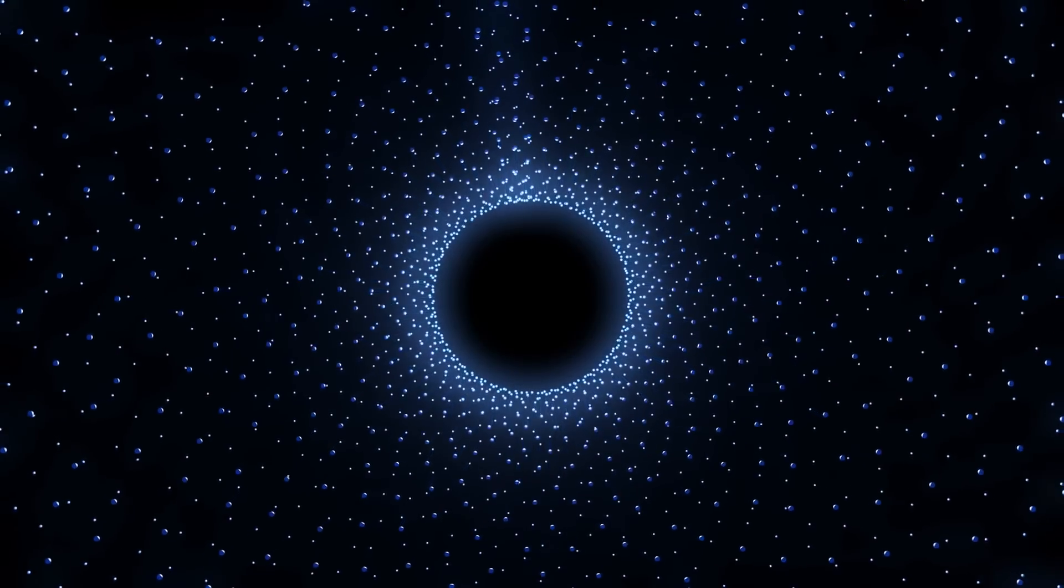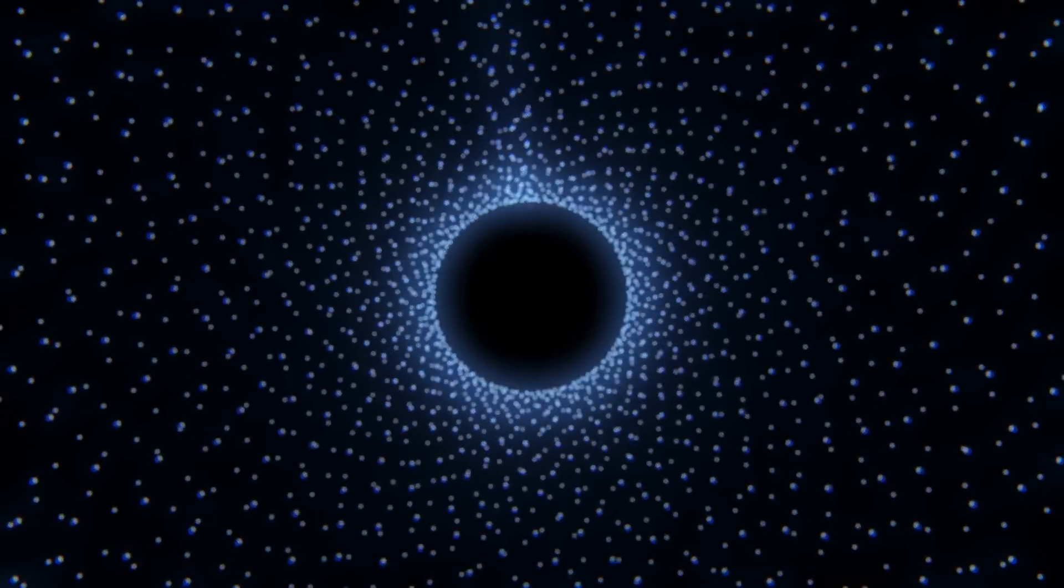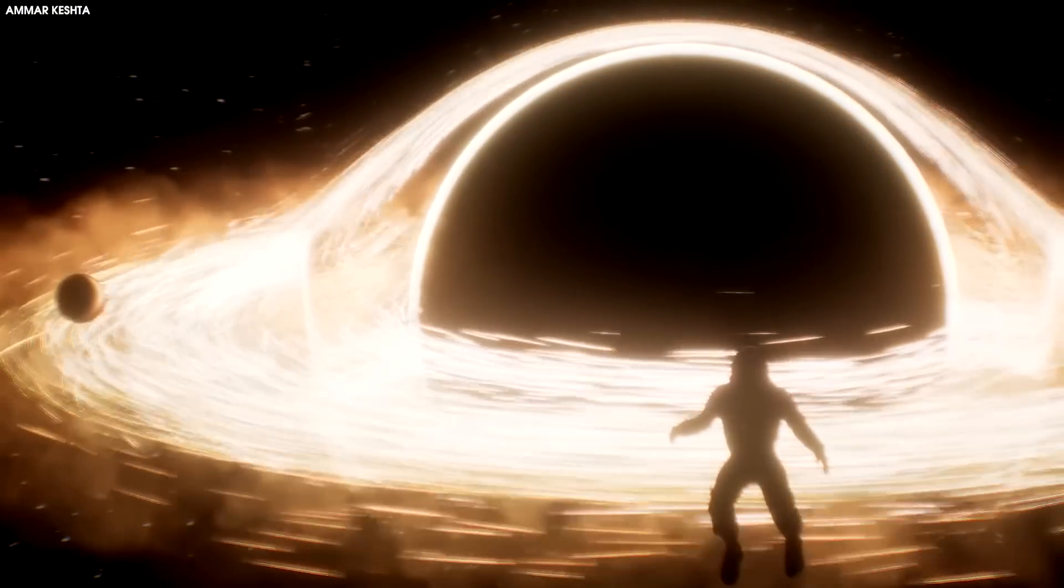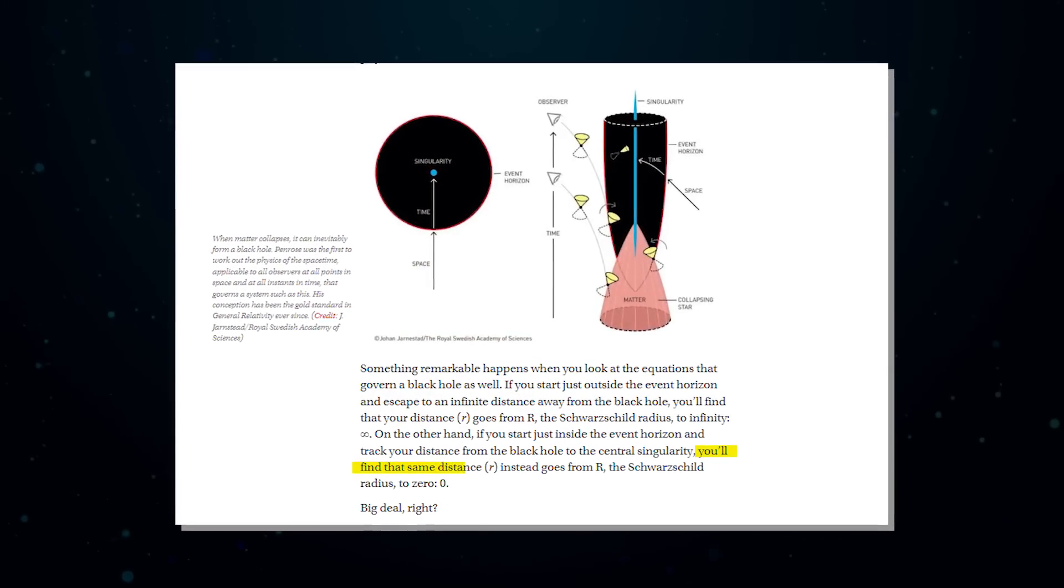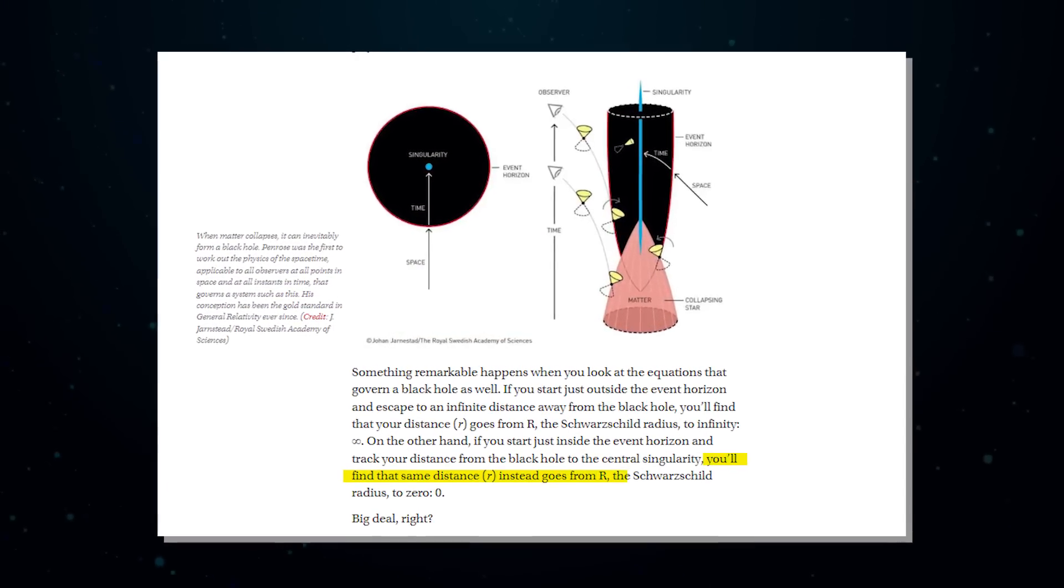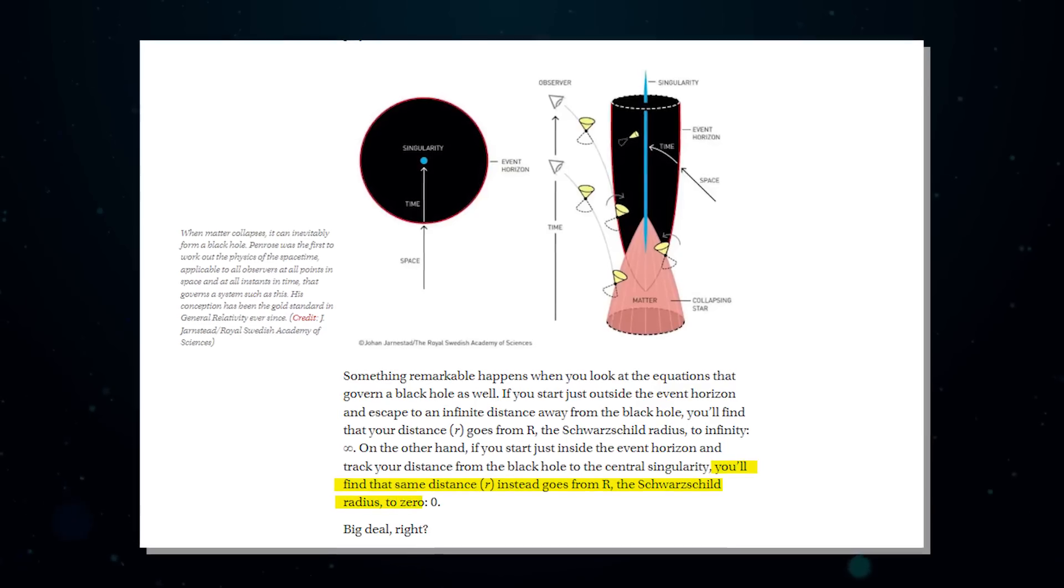On the other hand, if you start just inside the event horizon and track your distance from the black hole to the central singularity, you'll find that same distance, R, instead goes from R, the Schwarzschild radius, to zero.